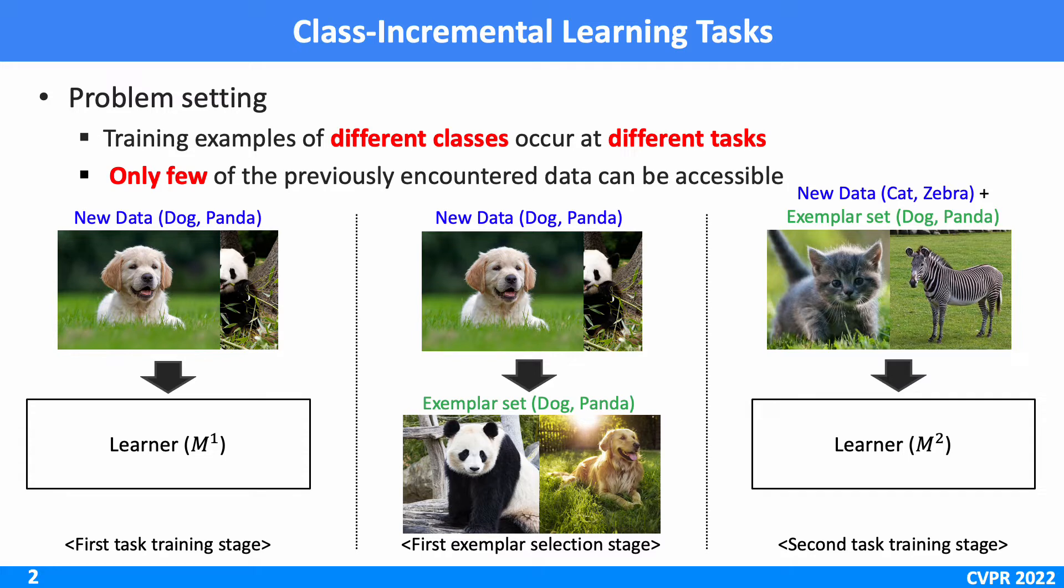To solve the task, the standard training protocol is illustrated in the figure. At the first task training stage, the model is trained as a typical classification training manner. After the first stage, the exemplar sets which effectively represent the whole dataset are constructed with a cardinality constraint.